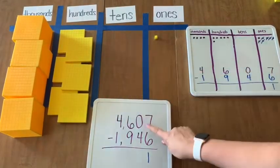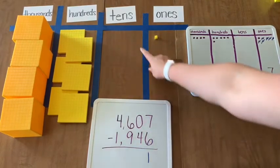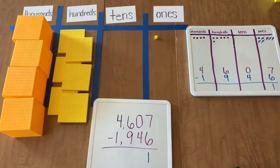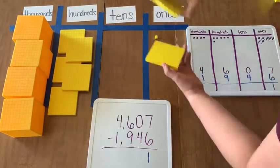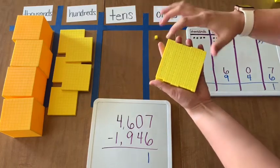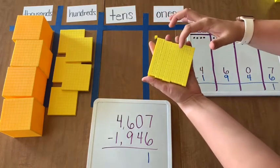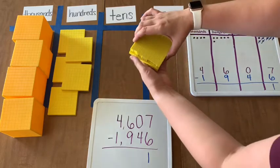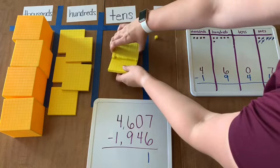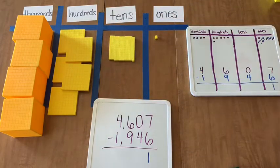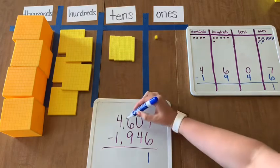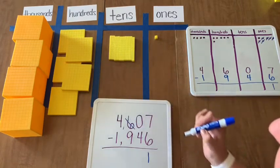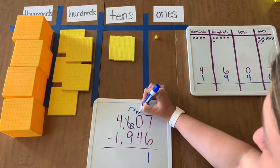Now I'm going to the tens. Now I'm taking away 4 tens. But I have no tens to take away. So I must remember that I have to get 100 and regroup it into 10 tens. There's 1, 2, 3, 4, 5, 6, 7, 8, 9, 10 tens. So I'm going to take one of my hundreds and regroup it into 10 tens.